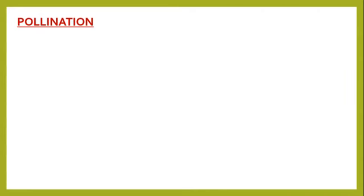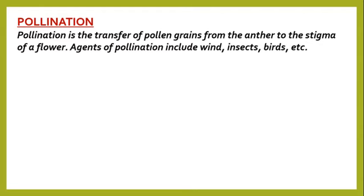Pollination. This may be the first time you are meeting the word pollination. What is pollination? It is a stage that follows flowering. The definition is: it is the transfer of pollen grains from the anther to the stigma of a flower. Let's take note that the anther is the part of the male reproductive part of the flower, while the stigma is of the female reproductive part of the flower.